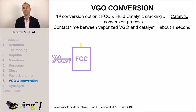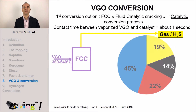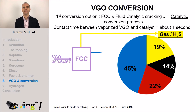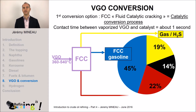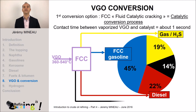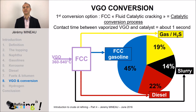The FCC produces some gas containing H2S, gasoline for approximately 50%, diesel fuel for approximately 20%, and the unconverted VGO which we call slurry, typically representing approximately 15%.